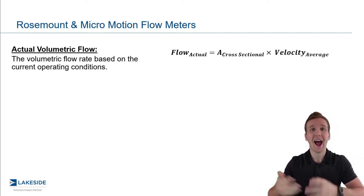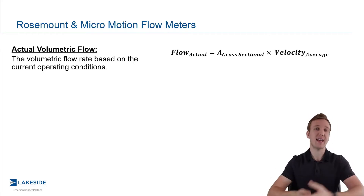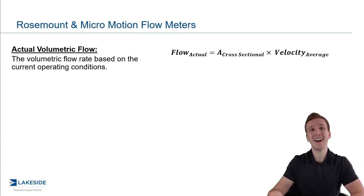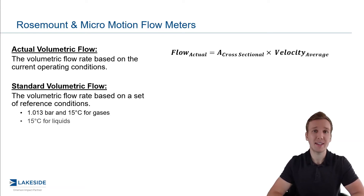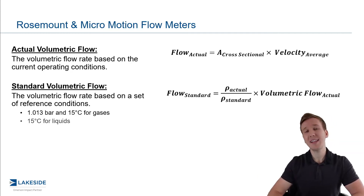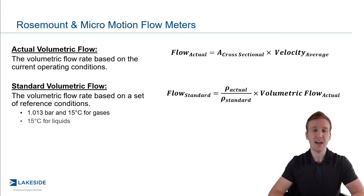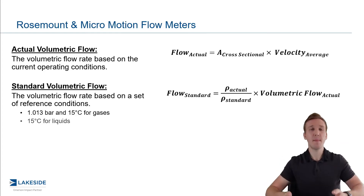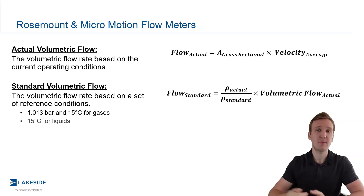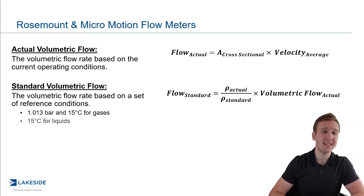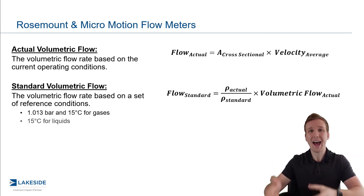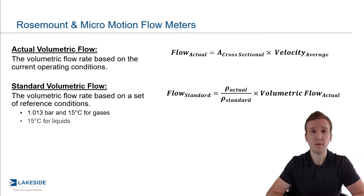If we look at an actual volumetric flow rate, this is just going to be a representation of the average velocity of that fluid in that given cross-sectional area. A way we can standardize this to account for deviations as pressures and temperature change is by referencing some sort of base set of reference conditions — most commonly one bar and 15 degrees Celsius in Canada. We would take that actual volumetric flow rate and multiply it by the ratio of the actual density over the standardized density to get a standardized volumetric flow rate. Keep in mind, this is not compensating for changes in pressures and temperatures — any error due to changes in density will still occur — but this allows us to add these standardized volumes over time, which is very important for totalizations.